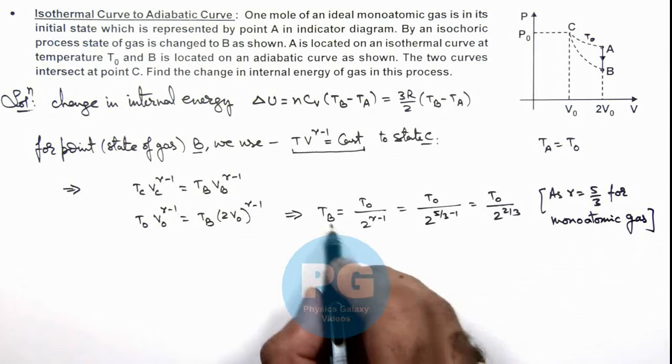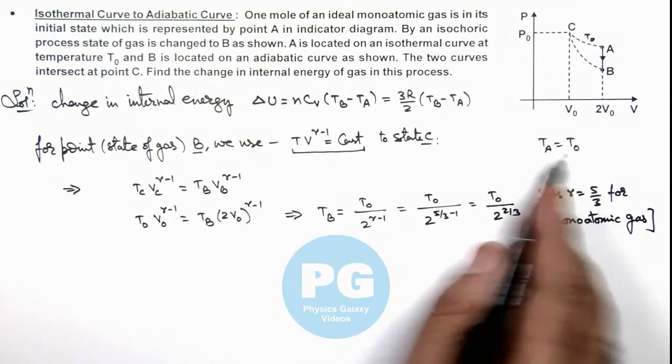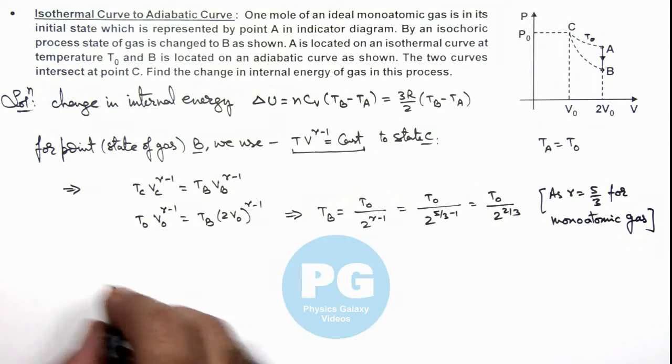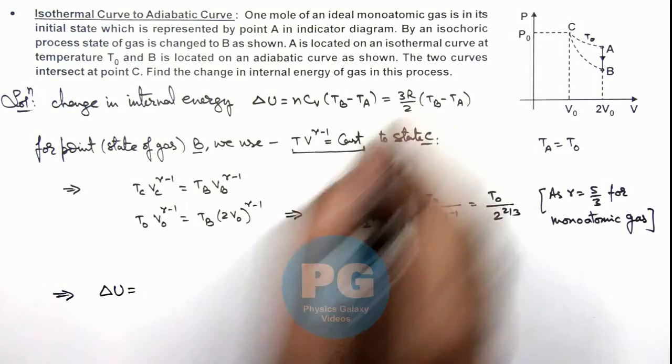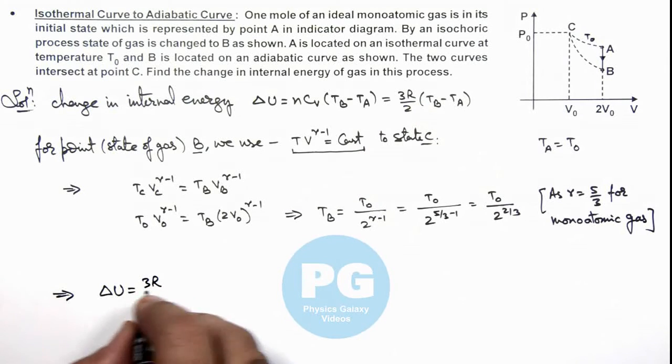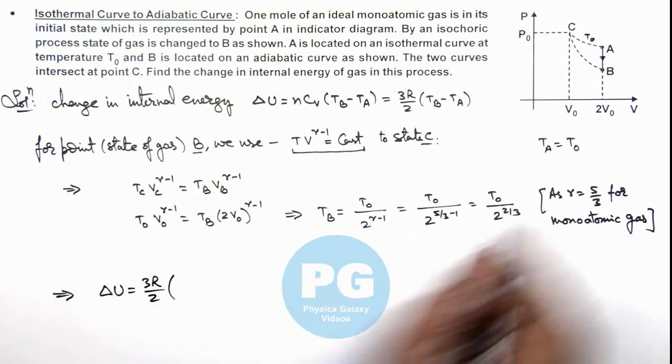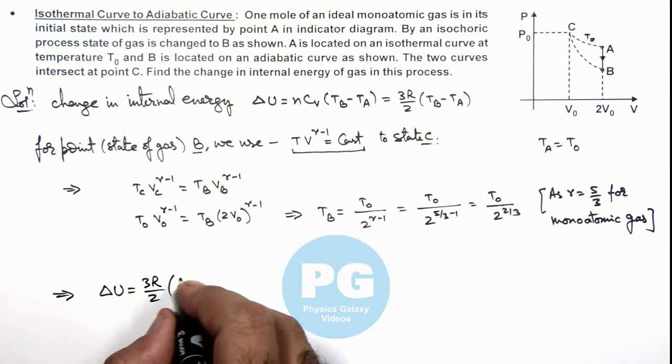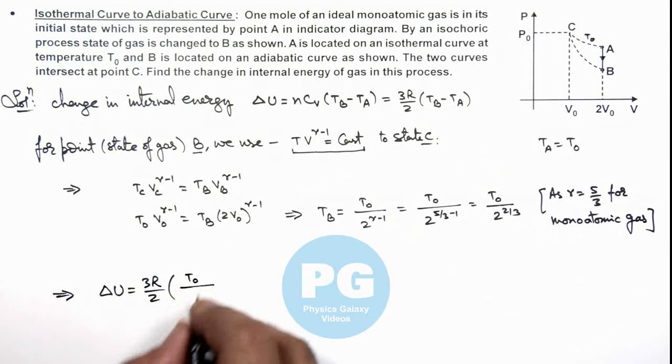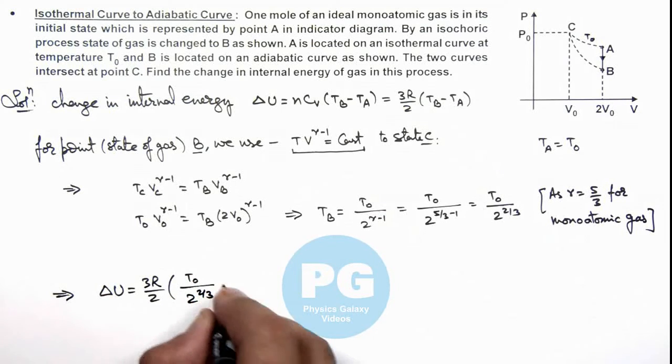So if we have the final temperature as well as initial temperature, we can directly get the value of increase in internal energy. This gives ΔU equals 3R/2 multiplied by TB minus TA, which is T₀ upon 2^(2/3) minus T₀.